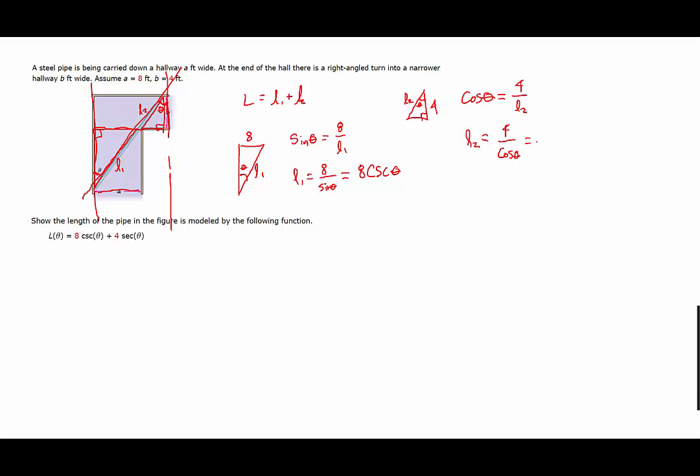But this could also be expressed as 4 times the secant of theta. So our total length L equal to L1 plus L2 then could be expressed in terms of theta as L1 is 8 cosecant theta plus L2, which is 4 secant theta.